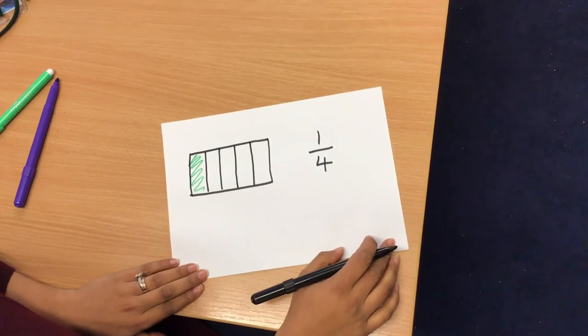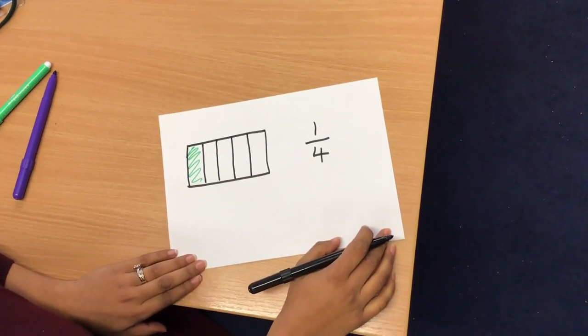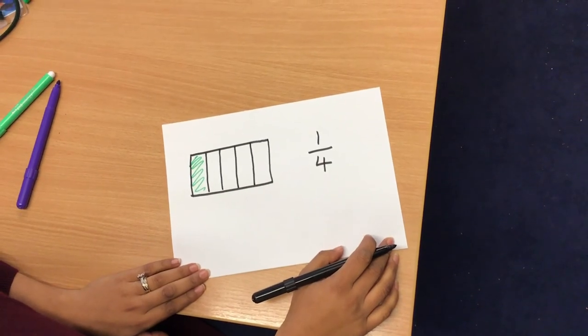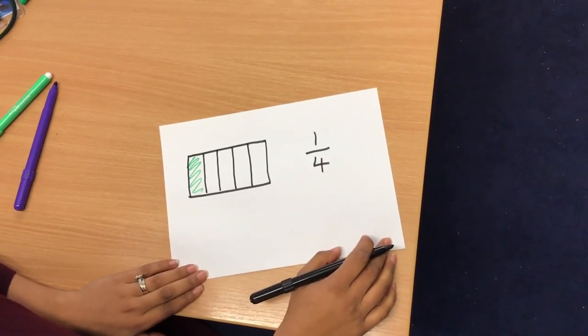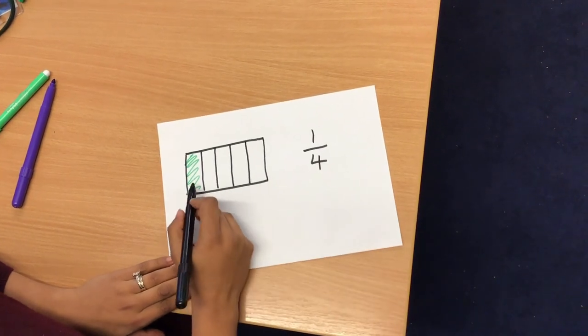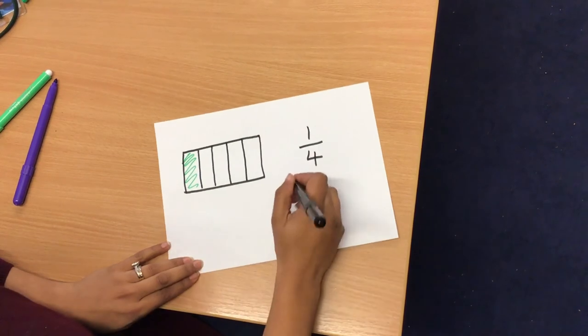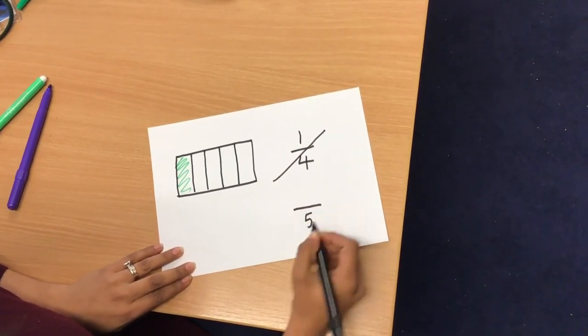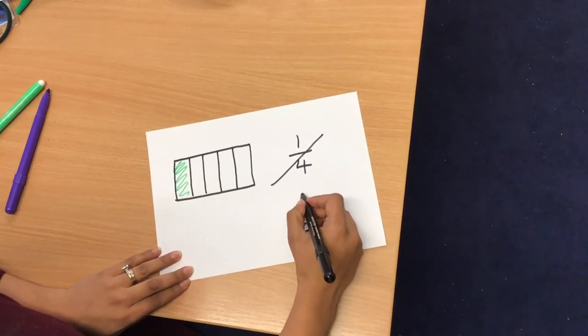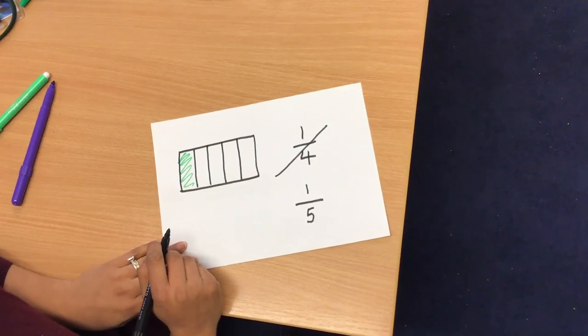Just to finish off, who can identify what the mistake is with this? Hopefully, you've all managed to identify the mistake. I have one, two, three, four, five parts in total. Therefore, the denominator is five. I have one part shaded. So, the fraction should be one fifth, not one quarter.